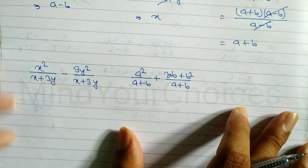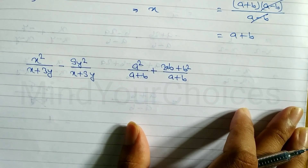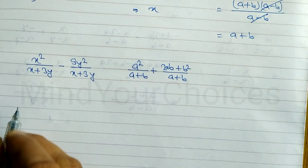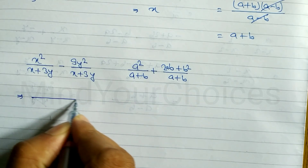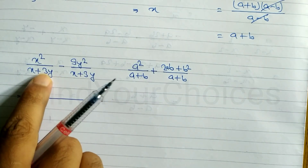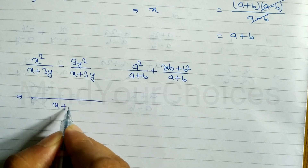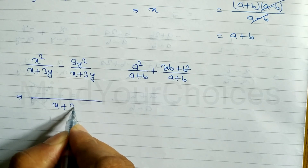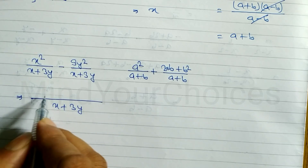Hope you understand those first three questions. Now look at the next question. The denominators are the same, so it's easy to take the LCM, and the LCM is (x+3y).